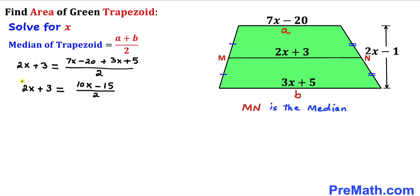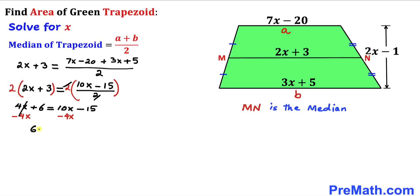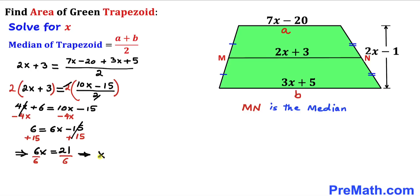To remove the fraction, multiply both sides by 2. Distributing on the left gives 4x plus 6, and the right simplifies to 10x minus 15. Subtracting 4x from both sides gives 6 equals 6x minus 15. Adding 15 to both sides gives 21 equals 6x. Dividing both sides by 6, x equals 7 divided by 2.